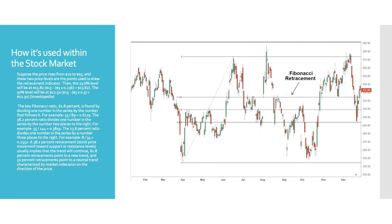As we see in this example from Investopedia, the Fibonacci retracement tool is being used on a stock chart. Key levels of retracement are the 23.6, the 38.2, and the 61.8. To find the 61.8 level, you divide one number in the series by the number that follows it. For the 38.2, you divide one number in the series by the number two places to the right — for example, 55 divided by 144, which equals 0.3819. For the 23.6% ratio, you divide one number in the series by the number three places to the right — for example, 8 divided by 34, which equals 0.2352.